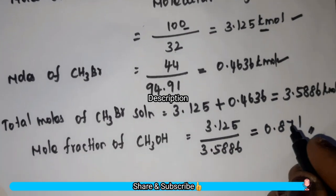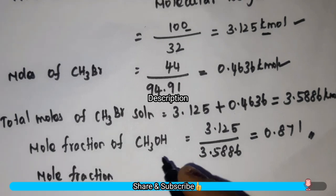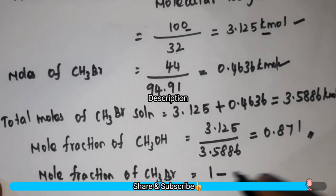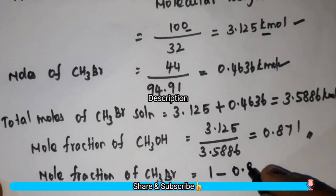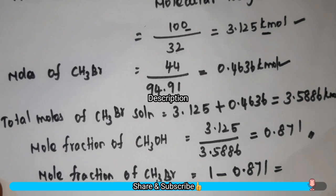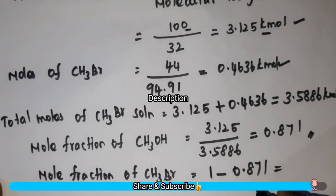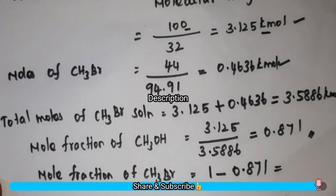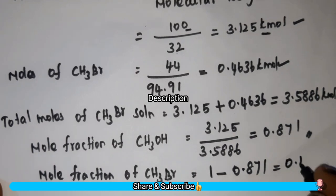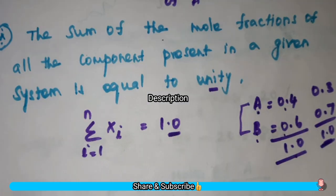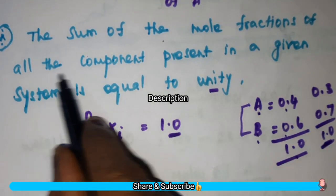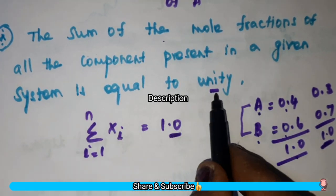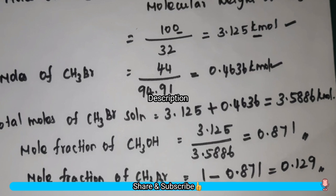If you want to calculate the mole fraction of methyl bromide, for mole fraction you have to subtract from 1 minus your known mole fraction. So 1 minus 0.871 is equal to 0.129. This applies the concept that the sum of the mole fractions of all the components present in a given system is equal to unity.